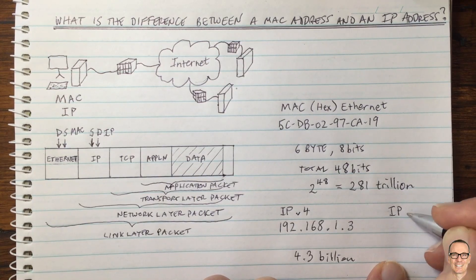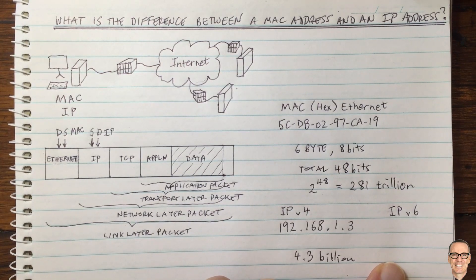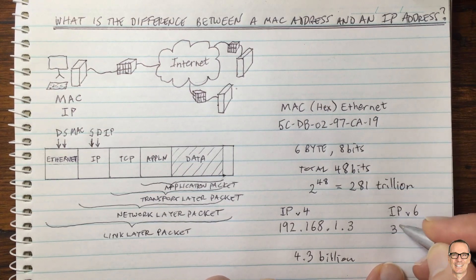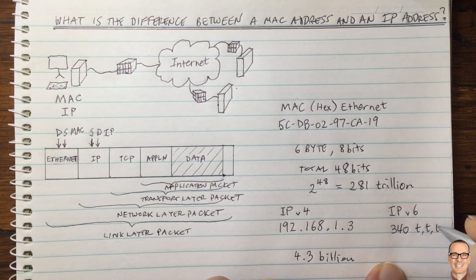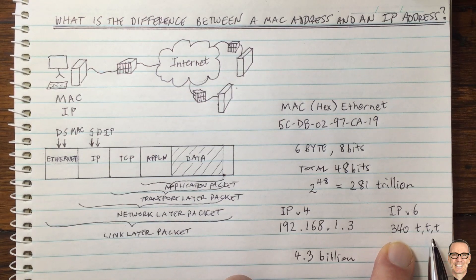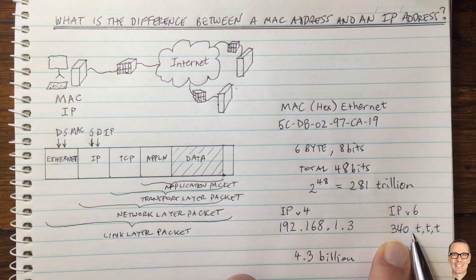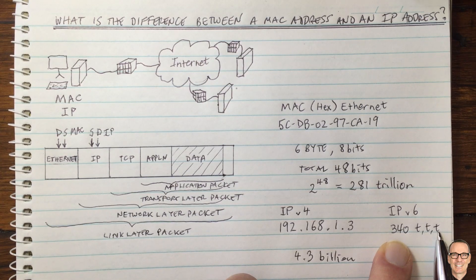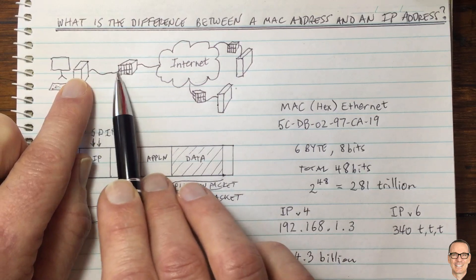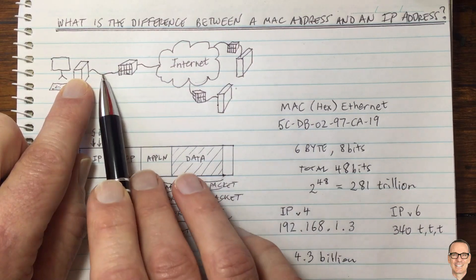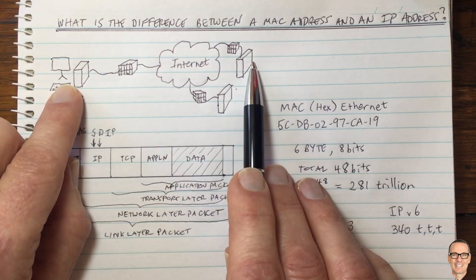We now have IPv6, a new format which opens up far more addresses. With IPv6, there are 340 trillion trillion trillion possible addresses — even more than the MAC address space. This means it will be possible for every single device to have its own unique IP address. So the question becomes: do we still need MAC addresses? If IPv6 gives us enough addresses to allocate one to every device, do we need the MAC address for the last link?